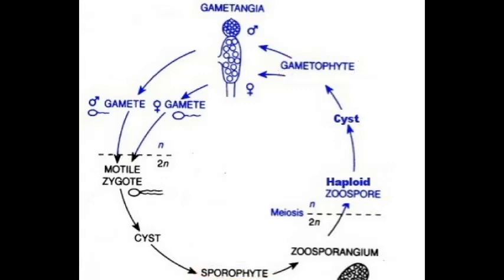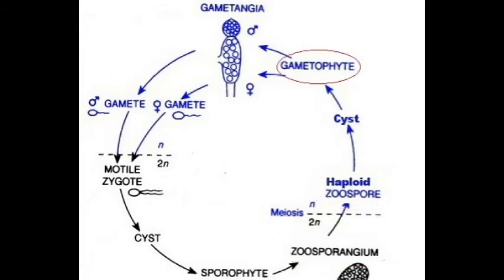Once again, we start with the developing chytrid in the sporophyte phase. As it matures, it develops a zoosporangium. However, the spores created in the zoosporangium are created through meiosis and thus are haploid. These haploid zoospores are released and, when they germinate, they enter the gametophyte phase.